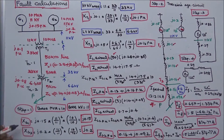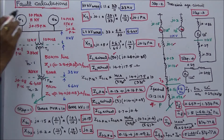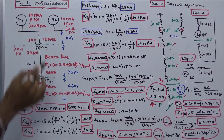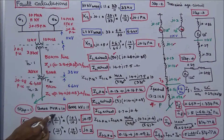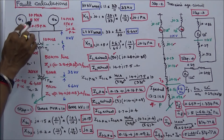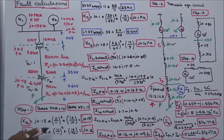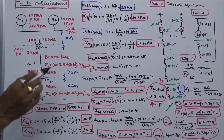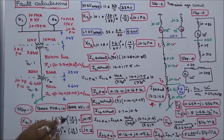Now I can calculate the per-unit reactance of Generator 1. The given reactance value is j0.15, multiplied by (V1/V2)² × (SB2/SB1). V1 is the given value, 11 kV; V2 is the chosen value, 11 kV; SB2 is the chosen base, 10 MVA; SB1 is the given value, 10 MVA. Therefore, XG1 = j0.15 per unit.